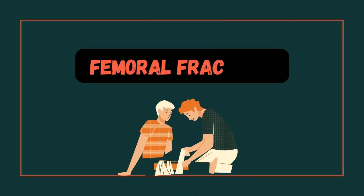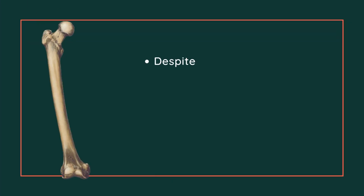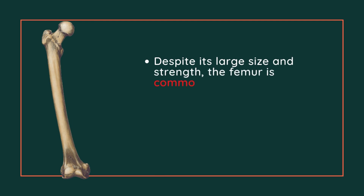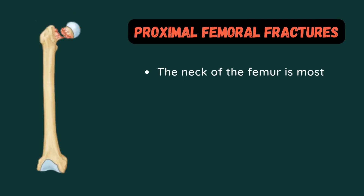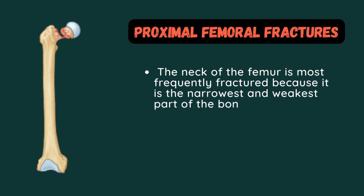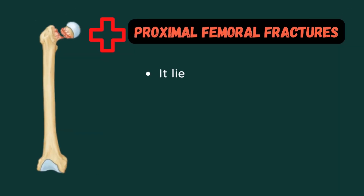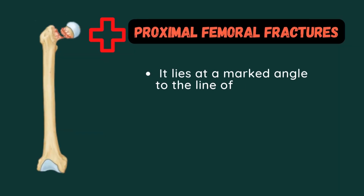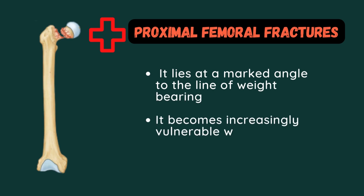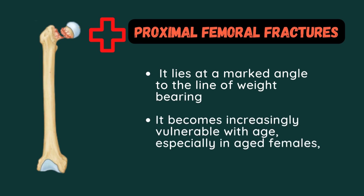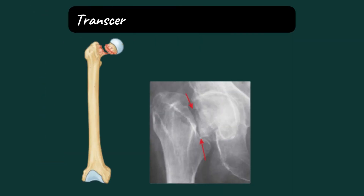Next we will discuss fractures of the femur, which are very common. Despite its large size and strength, the femur is commonly fractured. The neck of the femur is most frequently fractured because it is the narrowest and weakest part of the bone. One explanation is that it lies at a marked angle to the line of weight bearing.